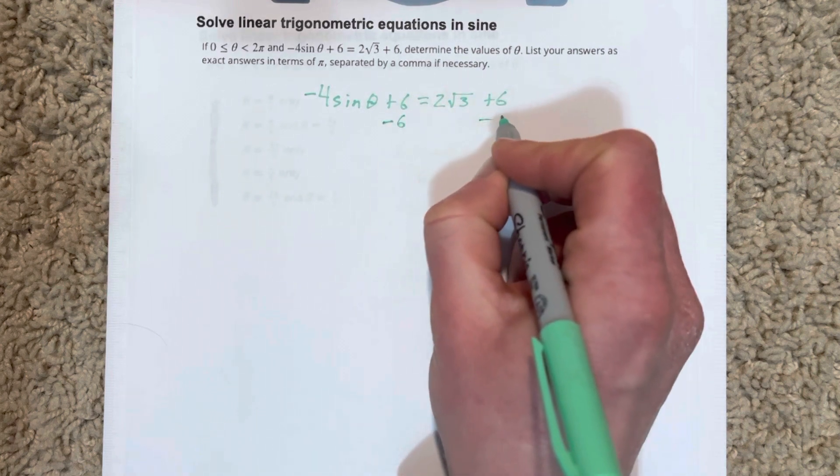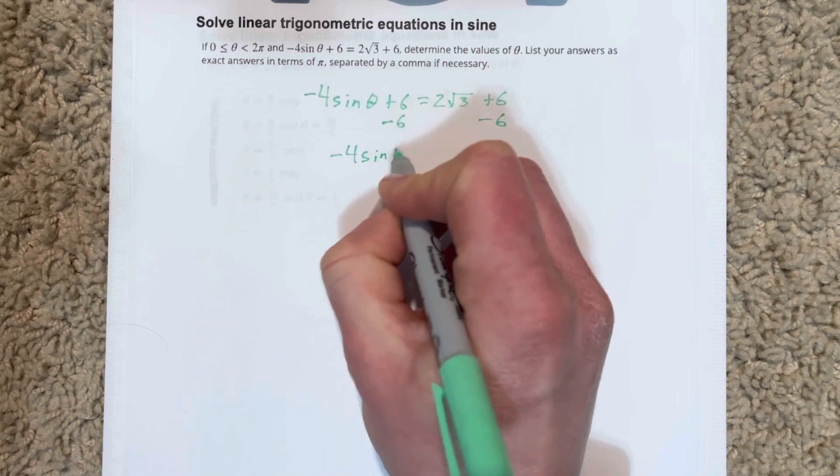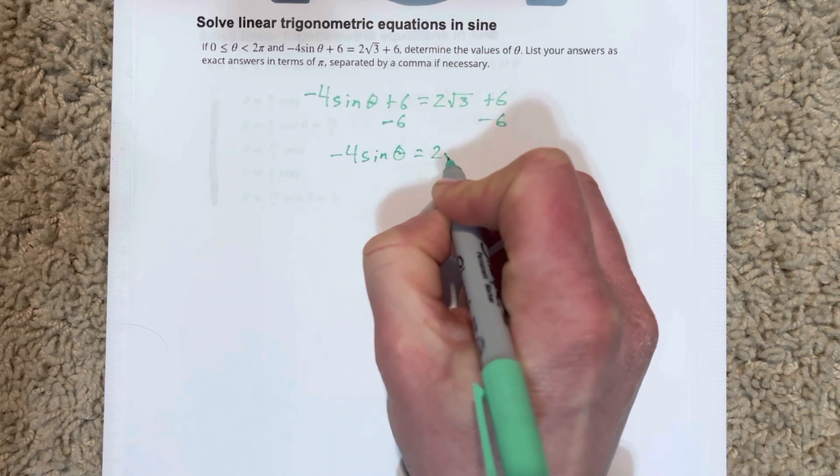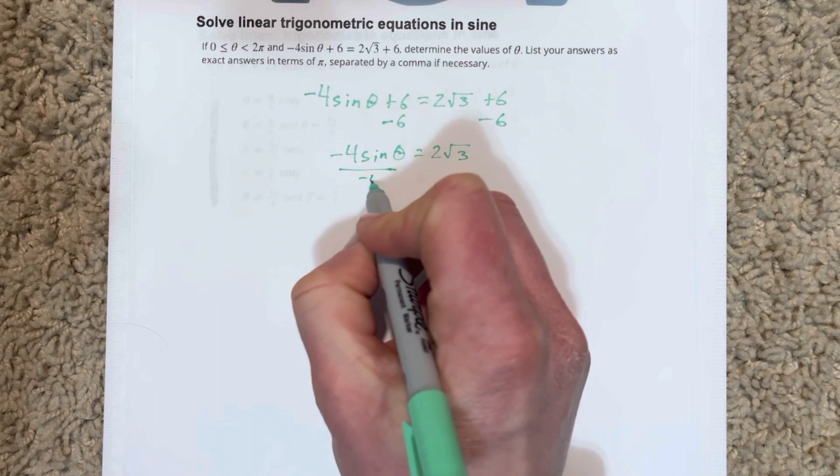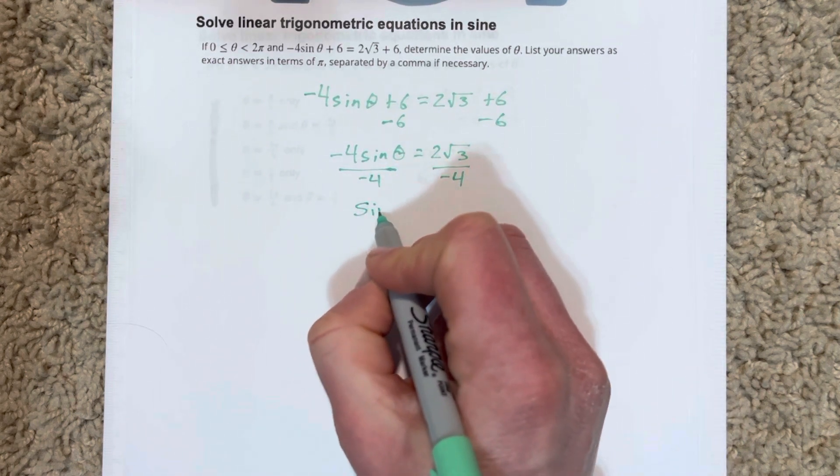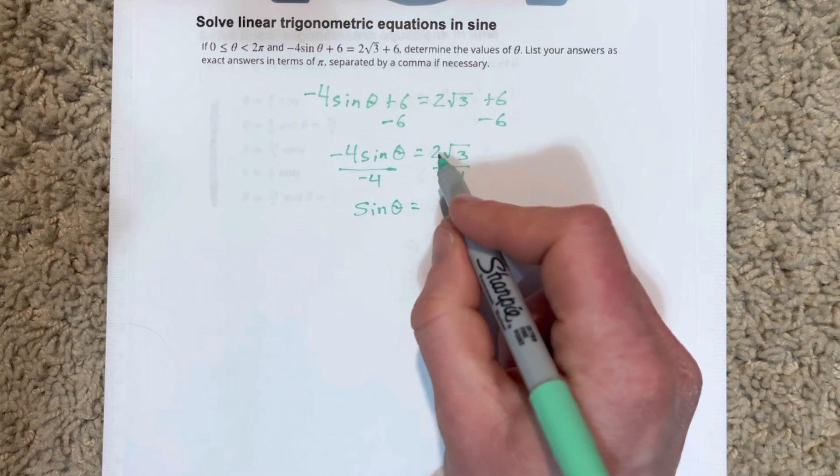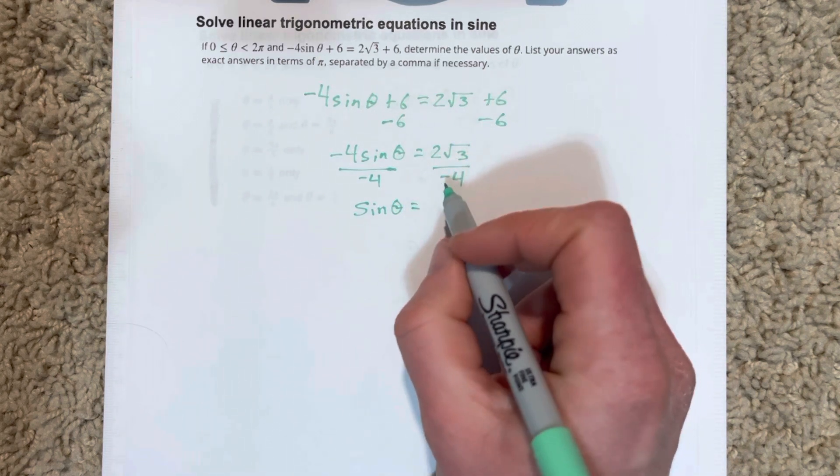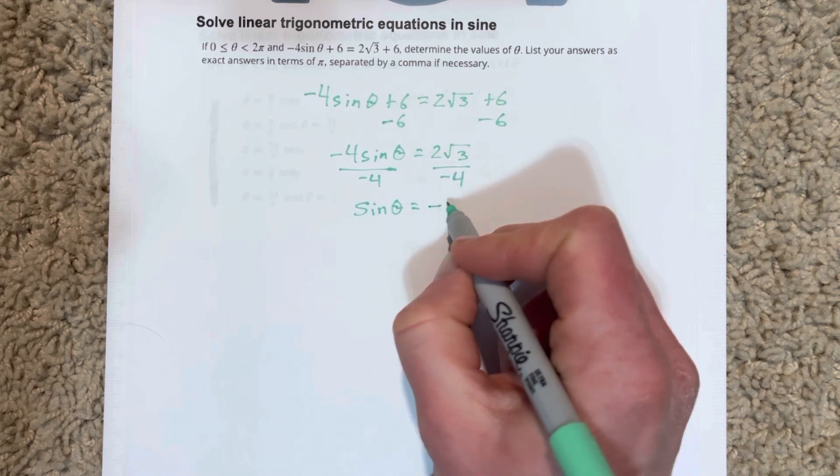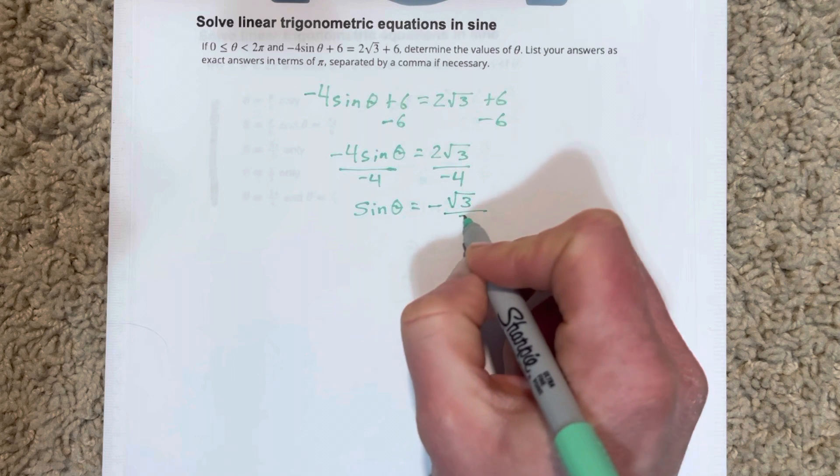We'll subtract 6 on each side. That cancels out. We get -4sin(θ) = 2√3. Then we're going to divide by -4 on each side. When we divide by -4 on each side, we get sin(θ) = 2 divided by -4. That simplifies to -√3, because the 2 cancels with the 4, over 2.